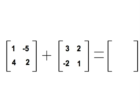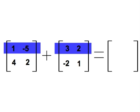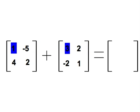So, we'll start with the numbers in the first row, first column, add those together, and put that answer in the first row, first column.